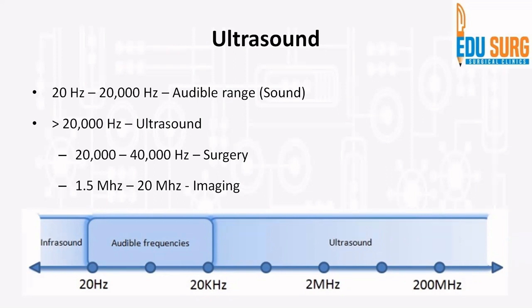CUSA usually uses frequencies between 20,000 and 40,000 Hz. That is the frequency used in surgery, whereas what we call ultrasound in imaging uses very high frequencies in the range of 1.5 megahertz to 20 megahertz. This slide contains a lot of MCQ-relevant values that you need to remember to understand these equipments.